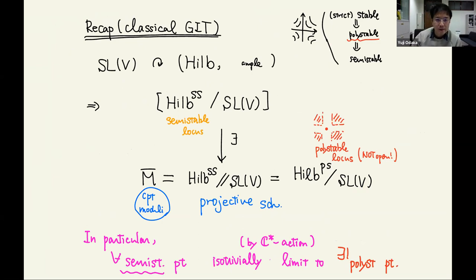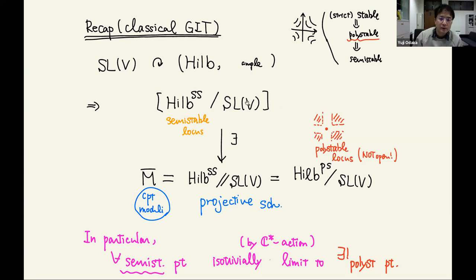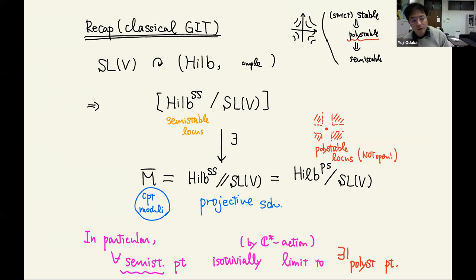Classical GIT looks like this. For example, in the construction of moduli of curves in the Mumford sense using GIT, one takes the Hilbert scheme of embedded curves and quotients out by SL via projective transformations. Since the Hilbert scheme parametrizes not only the curve but also its embedding, we want to remove the information of the embedding — just keeping the isomorphism class. We want to quotient it out, and the problem is about the existence of a coarse moduli of this quotient stack.